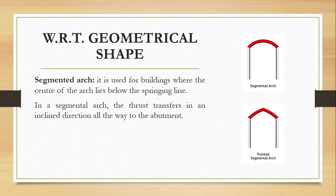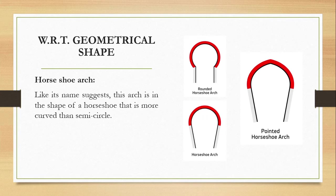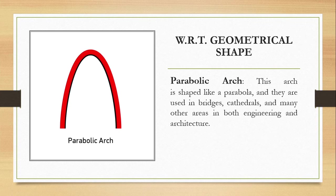The segmental arch is one where the center of the arch lies below the springing line. In a segmental arch, thrust transfers in an inclined direction to the abutment. There are two types: the semi-segmental arch and the pointed segmental arch. The horseshoe arch, as its name suggests, has a horseshoe shape — more curved than a semicircle. There are subtypes including the rounded horseshoe arch and the pointed horseshoe arch.